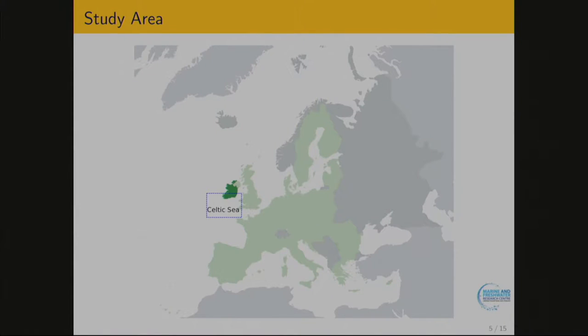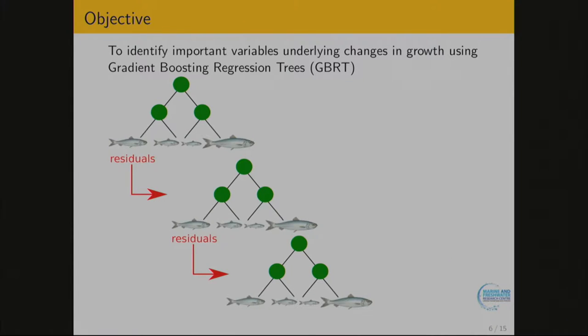The study area is called Celtic Seas, just south of Ireland, bounded by St. George Channel and the English Channel. The objective is to identify important factors which underlie this problem. To answer this question, I'm going to use gradient boosting regression trees, which is one of the ensemble algorithms available these days.